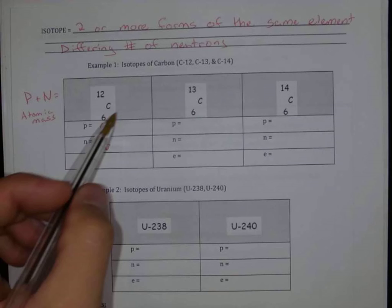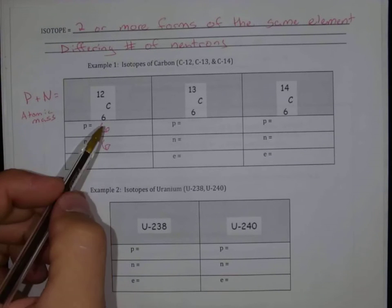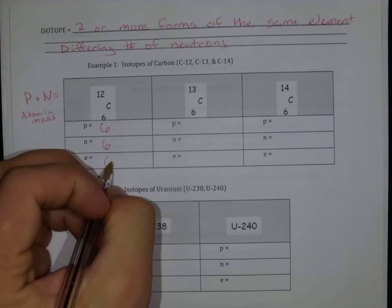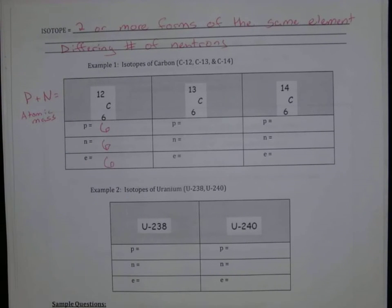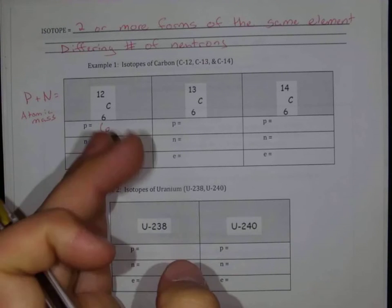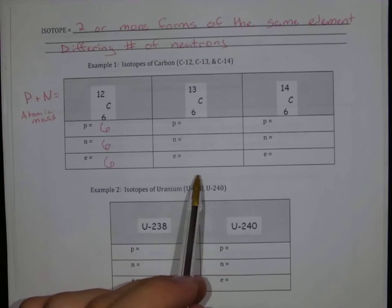Finally, because we don't have a charged species, this isn't an ion, we have six electrons to balance out our six protons. So now let's look at our second example here.